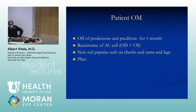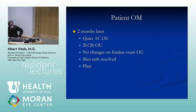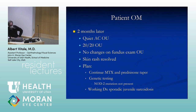Over two months he did beautifully — resolution of the iris mass, flattening of the choroidal lesions, and subretinal fluid resolved with 20/20 vision. However, one month after stopping prednisone, he had a recurrence of AC cells in his right eye and a new red papular rash on his cheeks, arms, and legs — supportive of a diagnosis of childhood sarcoidosis.